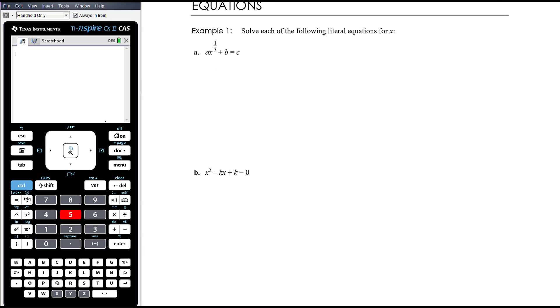So example 1, we want to solve the following literal equations for x. So we want to, in the first equation, identify that x is only in one place here. So we should really just be able to solve this quite simply by rearranging the equation till we get x on its own.